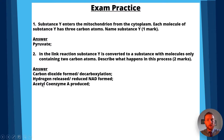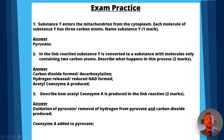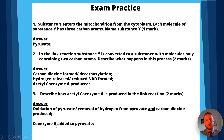Question three: describe how acetyl coenzyme A is produced in the link reaction, for two marks. The answer: the oxidation of pyruvate, or the removal of hydrogen from pyruvate, and carbon dioxide is produced — you need both parts of that to get your first mark. For your second mark, you would have said that coenzyme A is added to pyruvate.